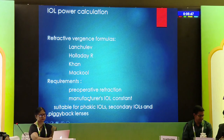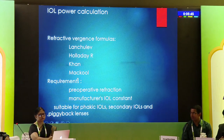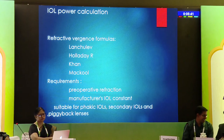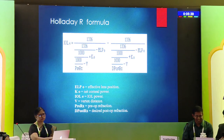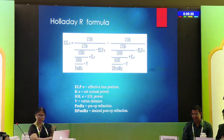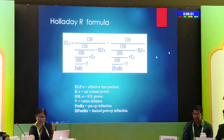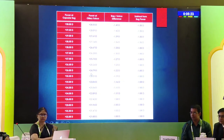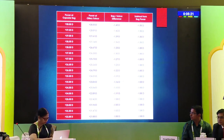Various formulas are available, but Halliday R — where R stands for refractive vergence — is good among these. In 1993, Jack Halliday proposed this formula, and it still holds good. The preoperative refraction and the desired postoperative refraction are the inputs, and based on these along with the ELP, we can calculate the lens power.